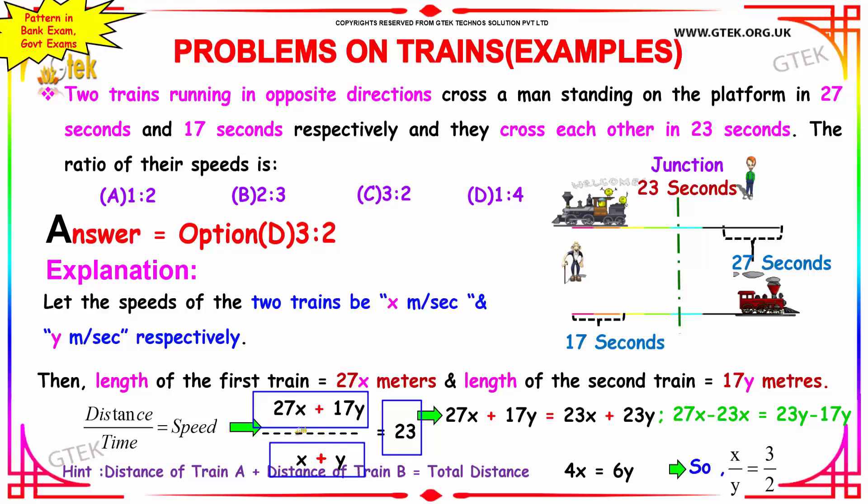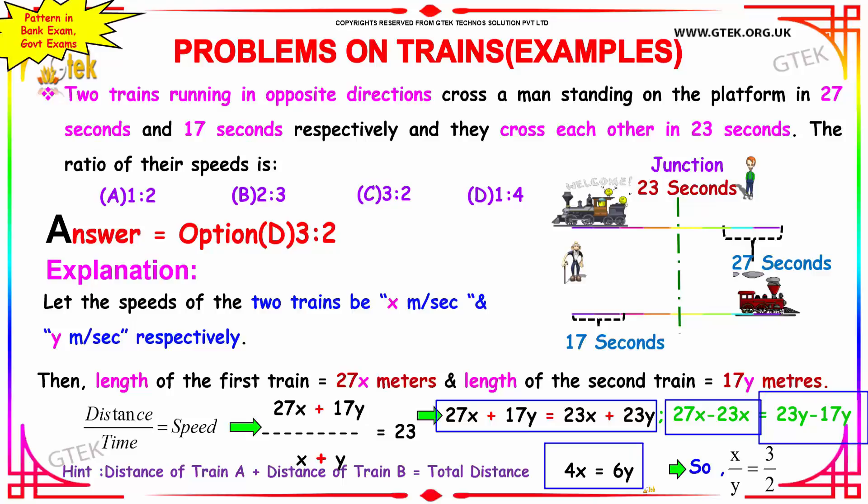Solving this equation you got 23X, 23Y. This X plus Y will go there. 23X, 23Y and 27X and 17Y, we got this equation. Moving your 23X here and 17Y here you got minus 23X and minus 17Y. 4X equal to 6Y, so X divided by Y is equal to 3 divided by 2. The option is 3 is to 2.